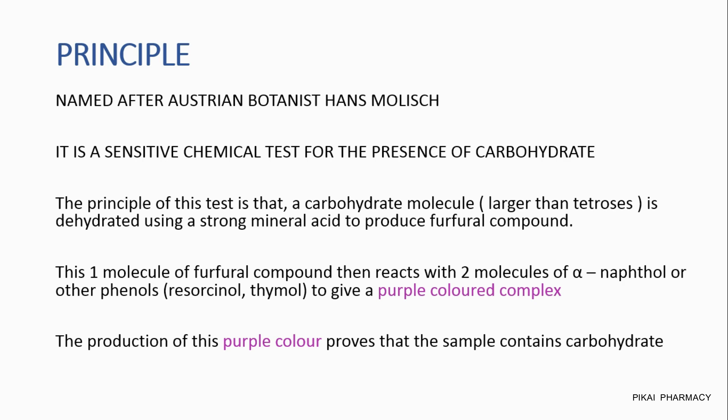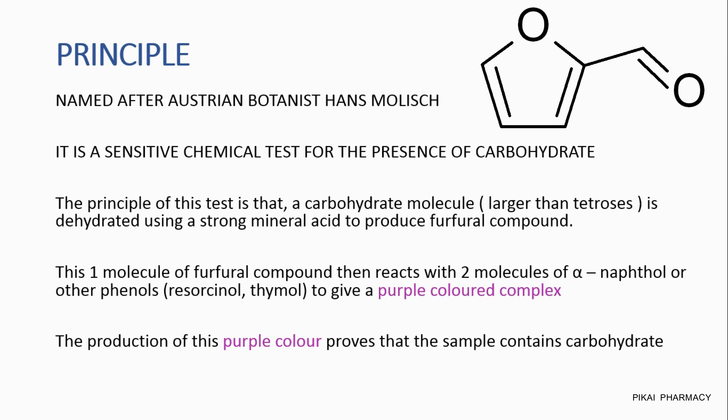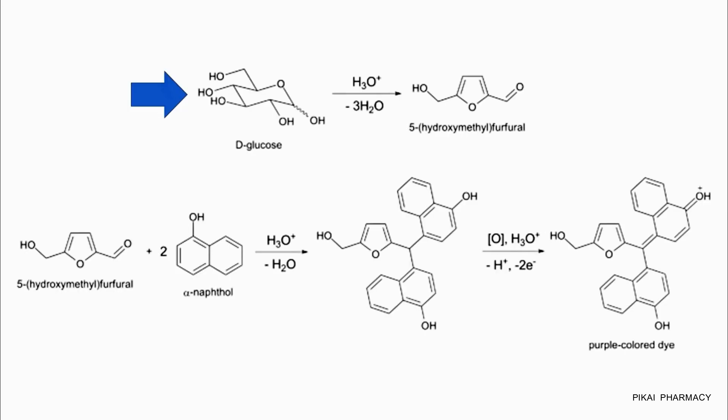The principle states that a carbohydrate molecule larger than tetrose is dehydrated using a strong mineral acid to produce a furfural compound. As you can see, this glucose molecule is dehydrated using strong mineral acids like sulfuric acid to produce 5-hydroxymethylfurfural.